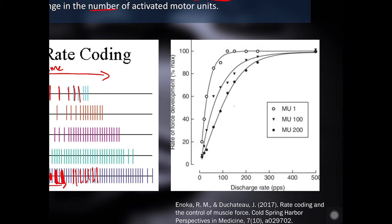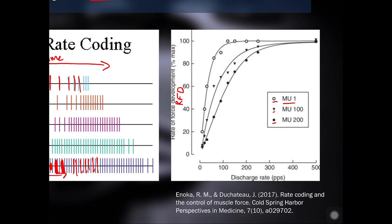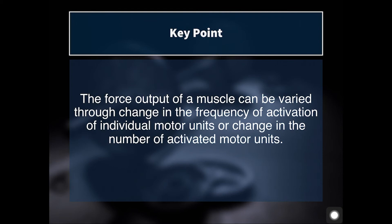Research by Inoka et al. looked at three different motor units — represented by a circle, triangle, and dark circle on a graph — and found these motor units have different discharge rates. The faster the discharge rate, the faster the rate of force development, abbreviated as RFD. Rate of force development is a more direct measure of the explosive ability of a muscle — the faster you develop force, the more explosive you can be. The key point is that force output can be varied through the change in frequency of activation of individual motor units or a change in the number of activated motor units, and usually it's a combination of both.